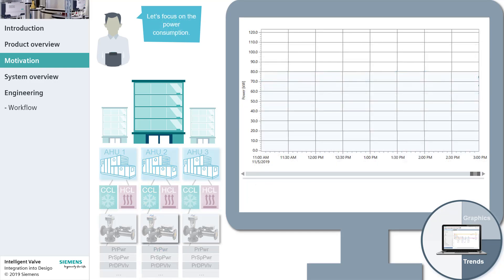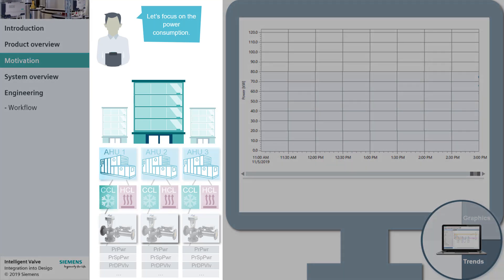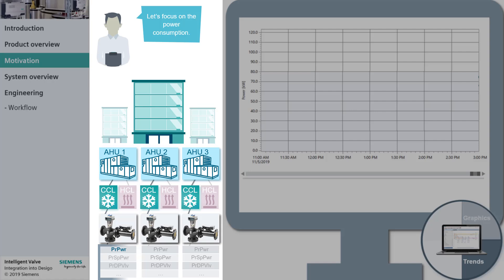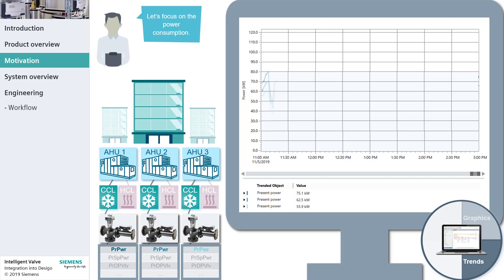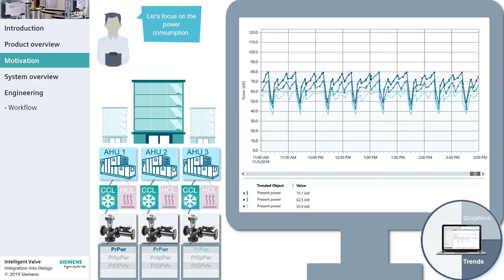Mike is not limited to trending data from one intelligent valve. As a second option, he can analyze data point curves from multiple valves at the same time. Mike is interested in optimizing the thermal power consumption. At a glance, he can identify any deviations from the expected power values. In the time period, the power consumption seems to be in the normal range.